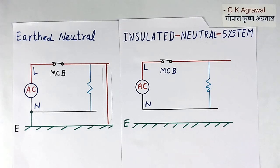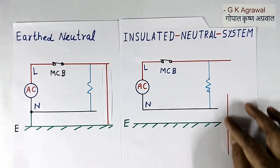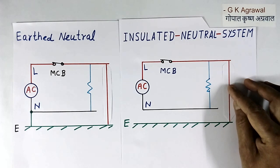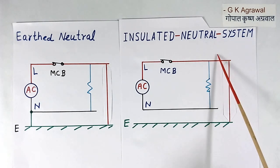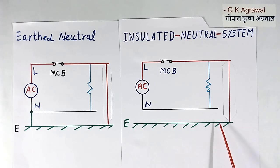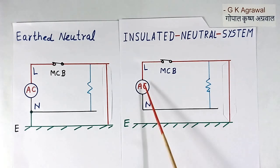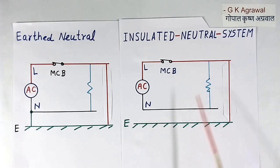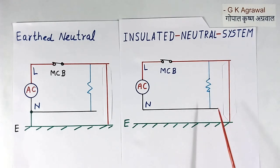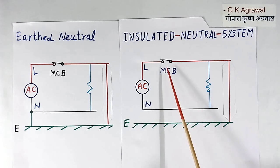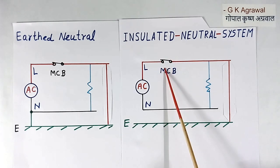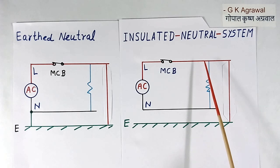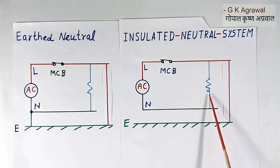In the insulated neutral system, suppose there is also a short circuit between line and earth. But here, current will not flow. There is no return path, so current will not flow due to the short circuit. As current will not flow, the MCB will not trip, and we will continue to get AC supply across the load. The load or equipment will continue to work.